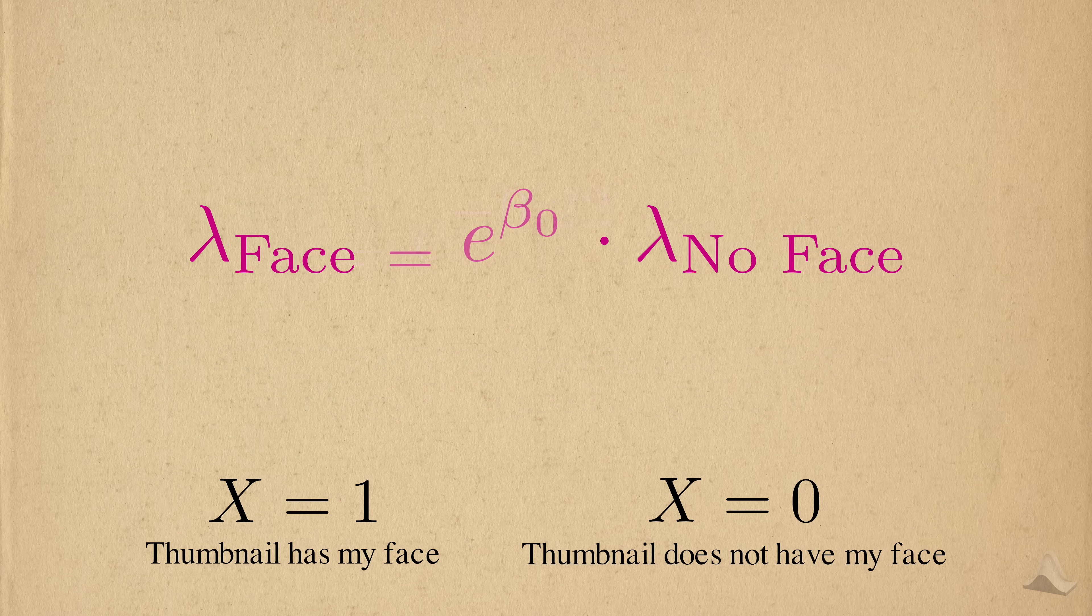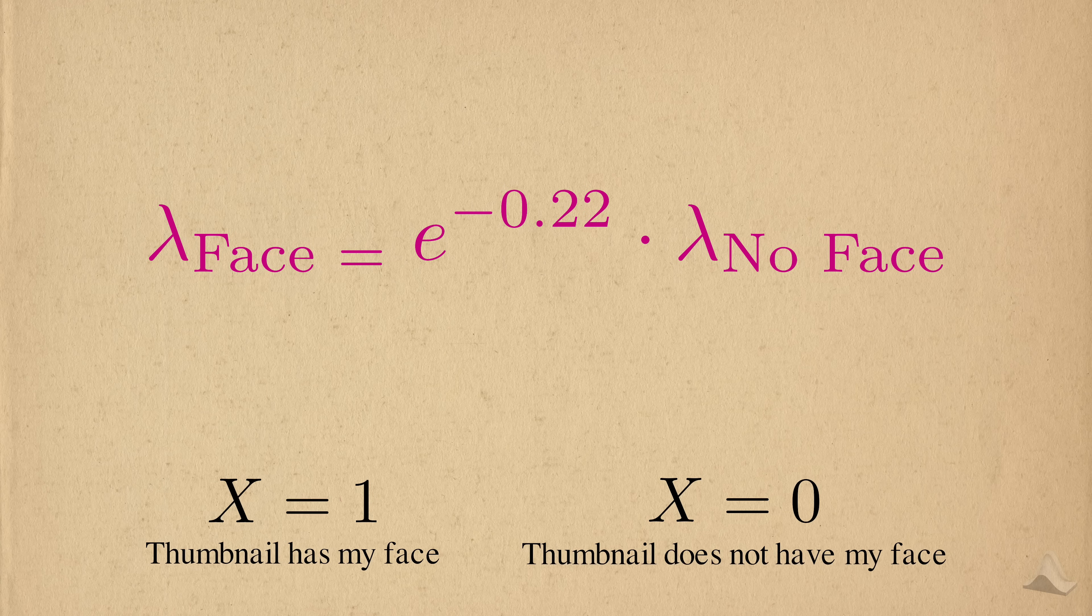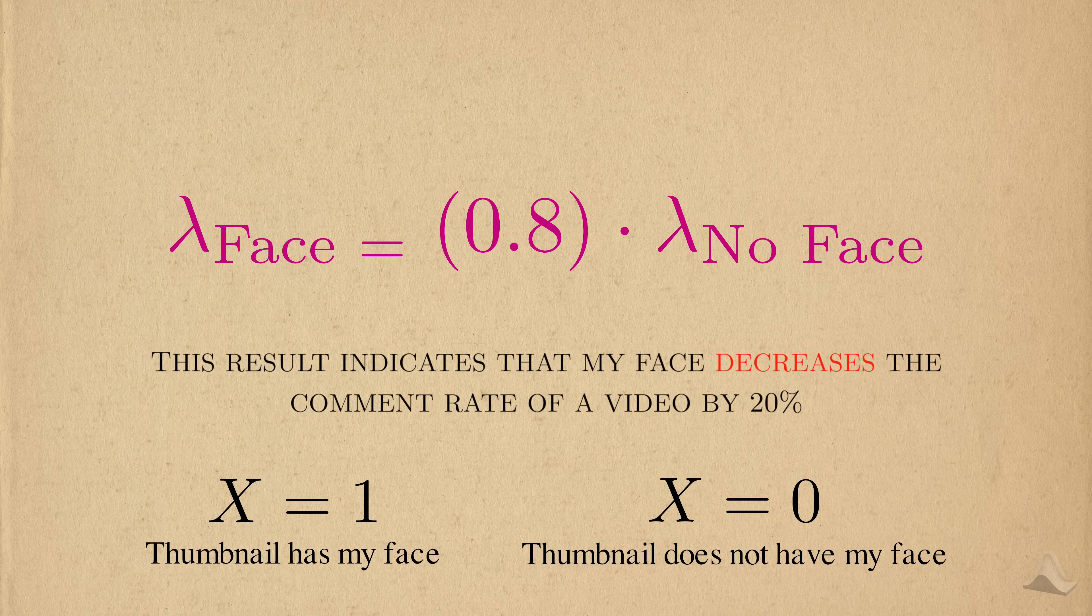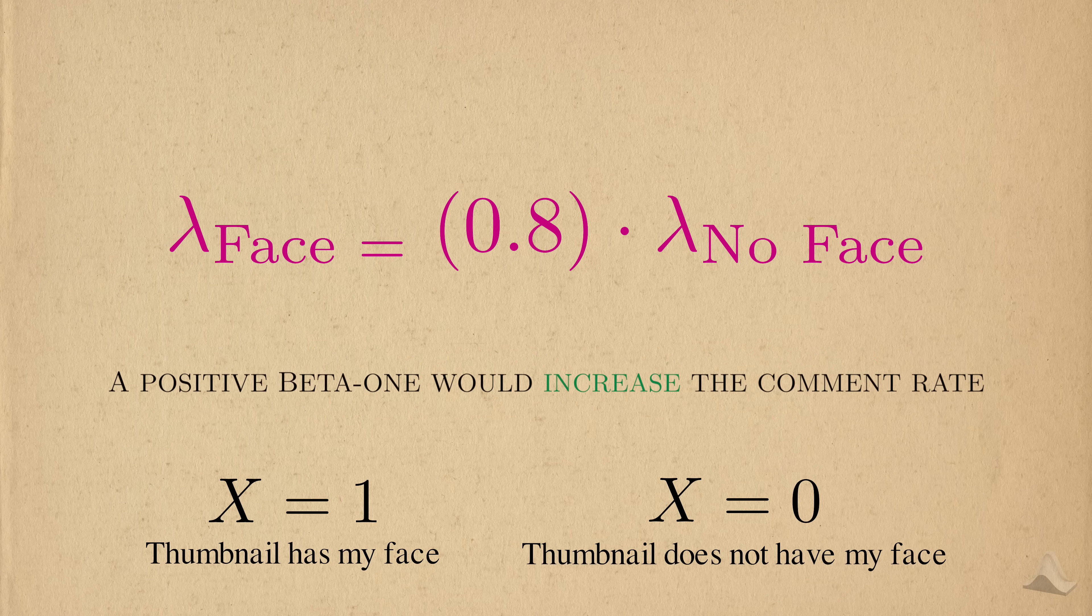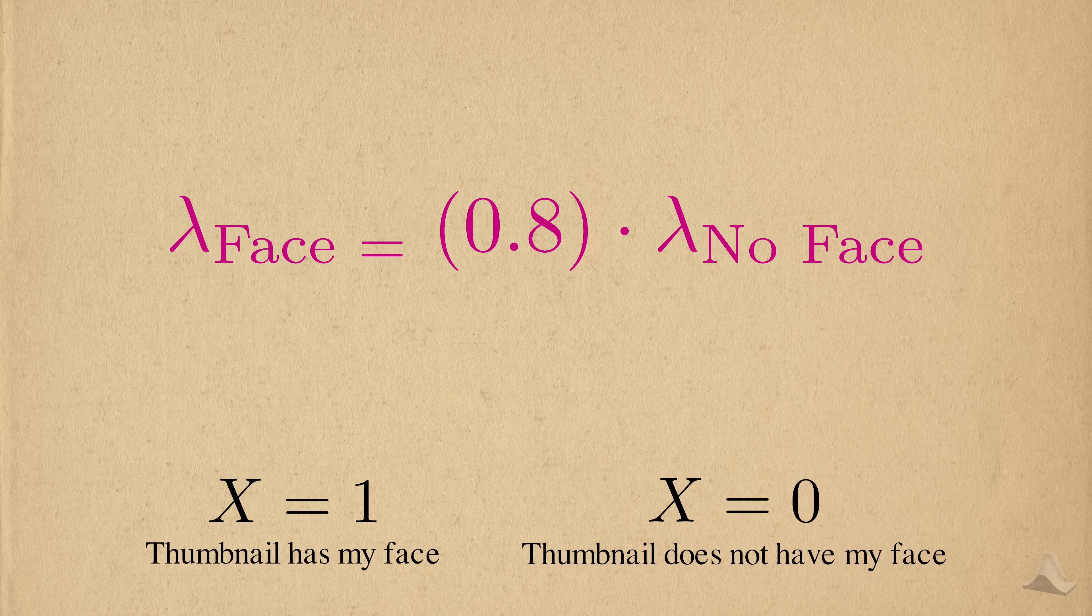E raised to beta 1 describes how having my face on the video thumbnail changes the comment rate on a multiplicative scale. For instance, if beta 1 was negative 0.22, then E raised to negative beta 1 would be about 80%. This result indicates that my face decreases the comment rate by about 20%, which probably makes sense. The reverse logic works if beta 1 is positive. I hope this helps explain how GLMs can be used to accommodate a wider variety of outcomes.